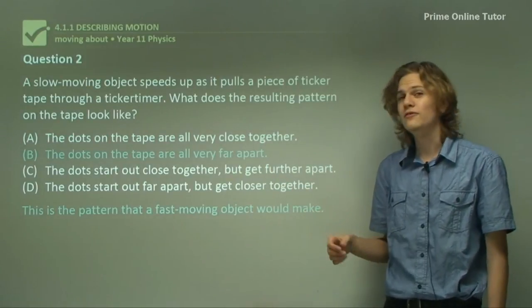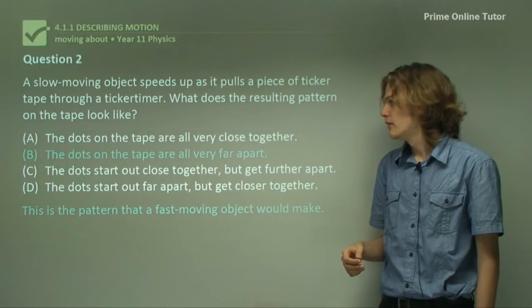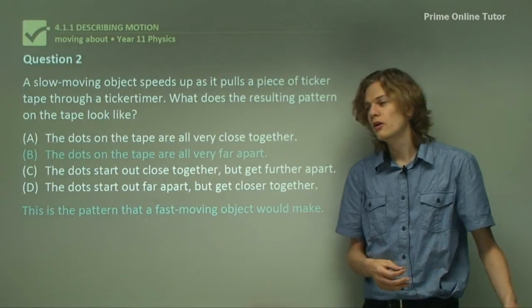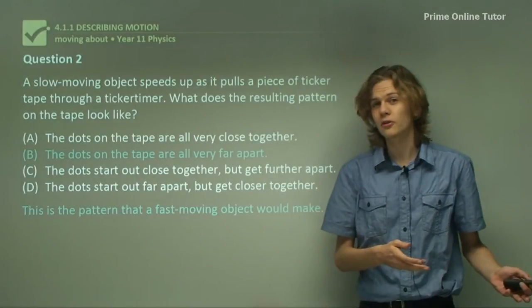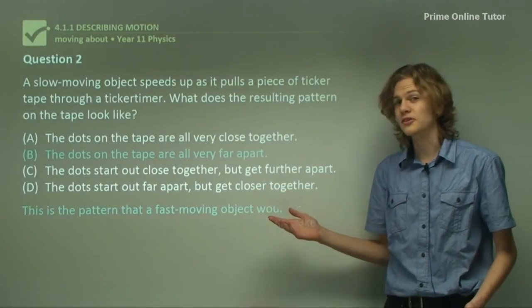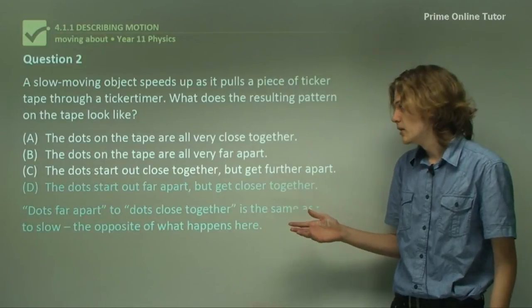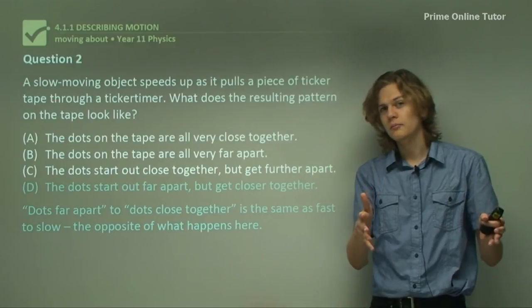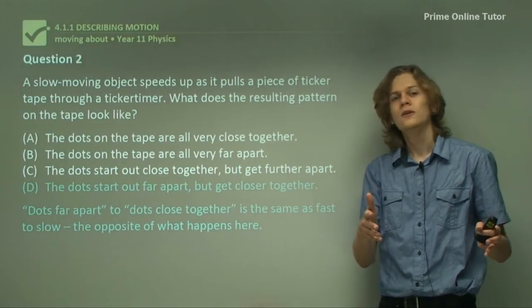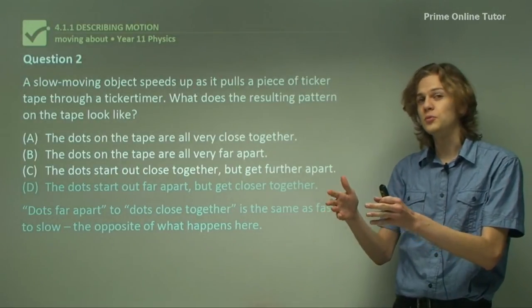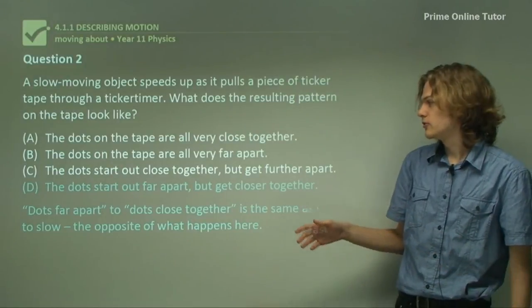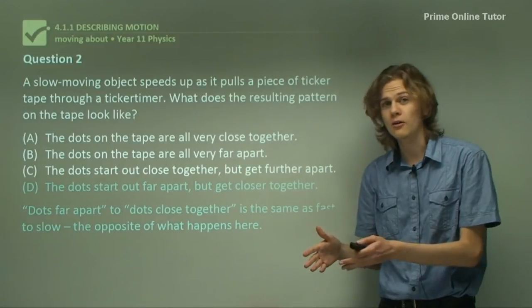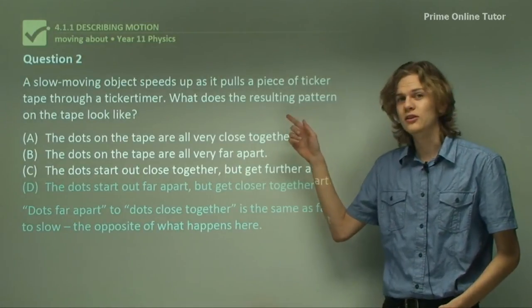Option B, the dots on the tape are all very far apart. In this case, the object pulling the tape through the ticker timer would be moving at constant speed but moving very fast instead of very slow. So this isn't the right answer either. Option D, the dots start out far apart but get close together. Now, dots far apart means the object is moving fast. Dots close together mean that the object is moving slow. If the dots start out far apart and get close together, it means that the object started out fast and then slowed down, which is the opposite of what we see the motion actually was.